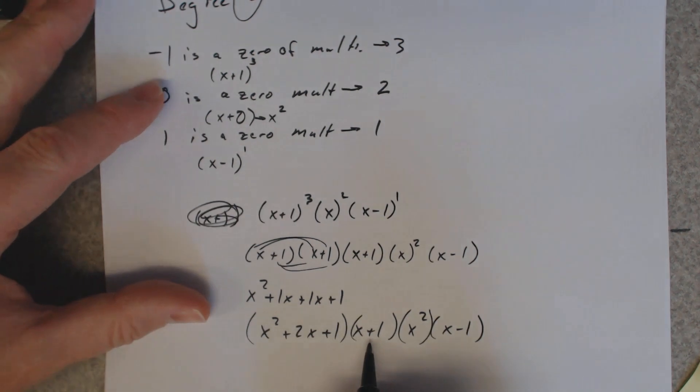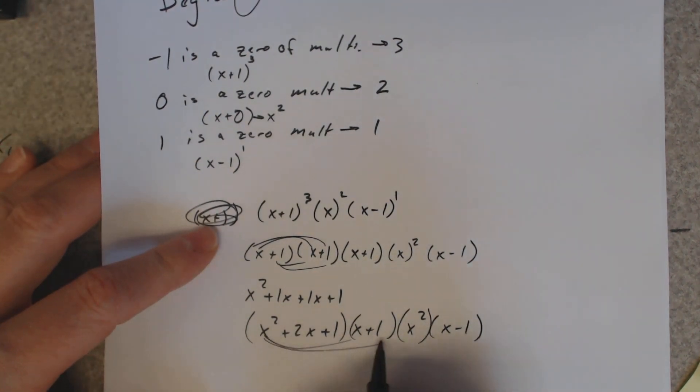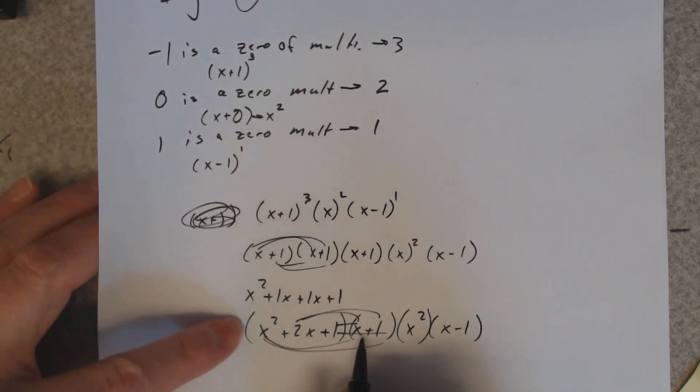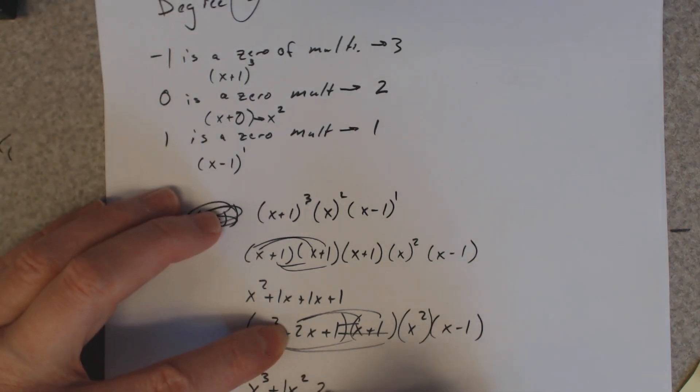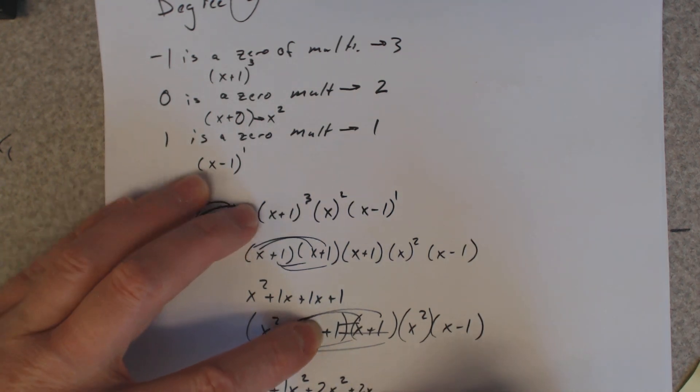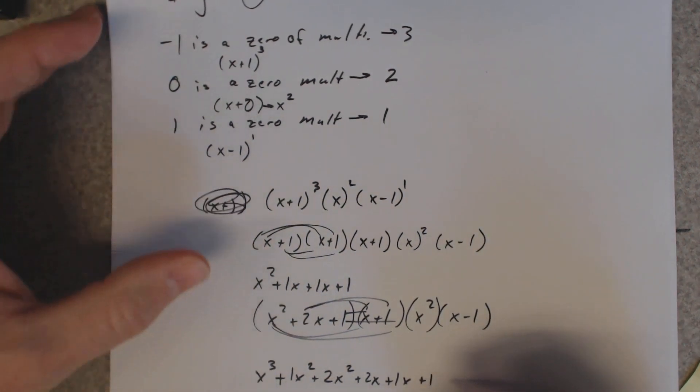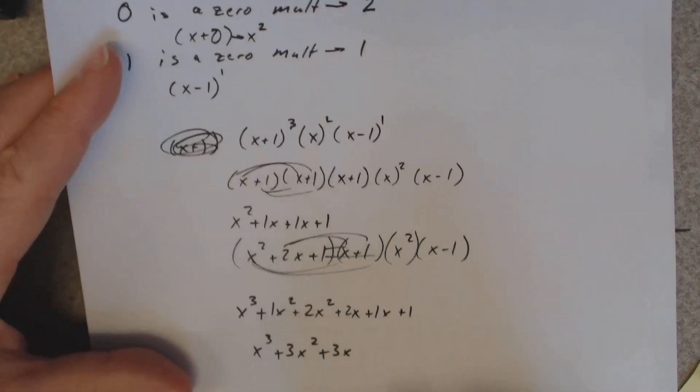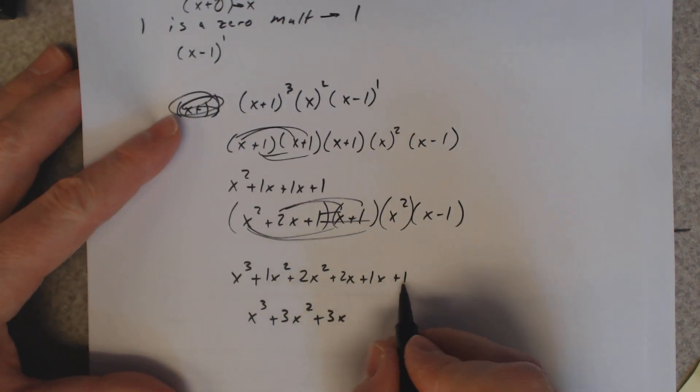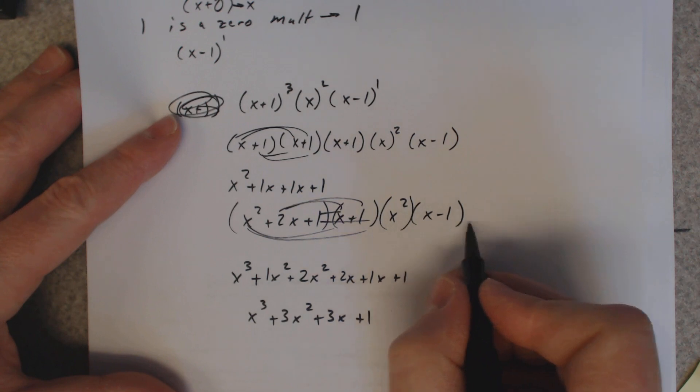All right, now I'm going to multiply out by x minus 1. So you distribute x squared, distribute a 2x, then distribute the 1. And I'm going to clean it up a bit. These two terms will go together, so we get x cubed plus 3x squared plus 3x plus 1.